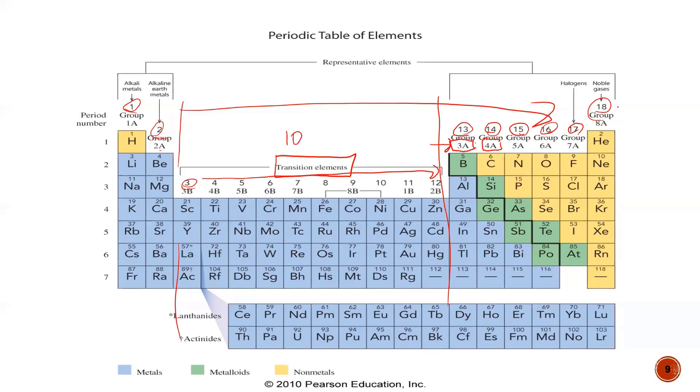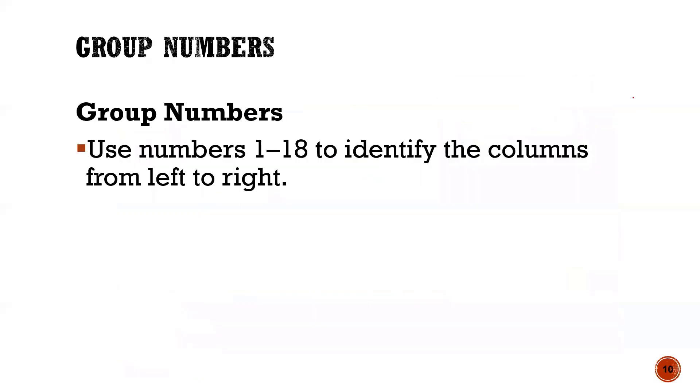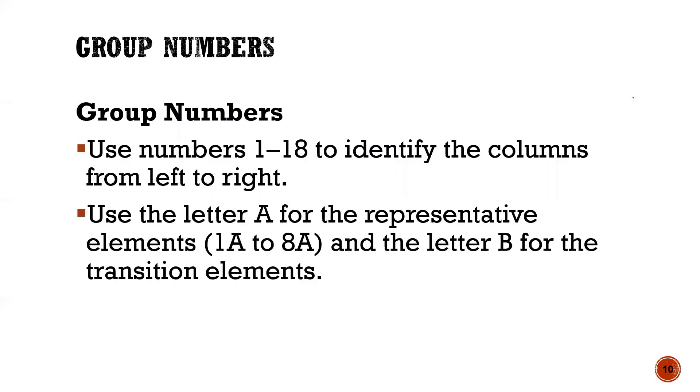So either number is okay. You can use, for example, for the noble gases, 18 or 8a. Old school method is focused on the valence electrons, which I think is very useful. So group numbers, 1 through 18, used to identify left to right. We can use the letter a to represent the elements 1a to 8a, and the letter b for those 10 columns in the center that I call the transition metals.